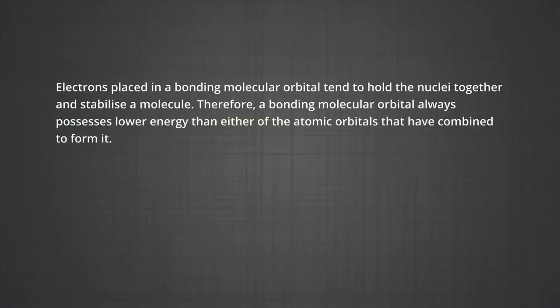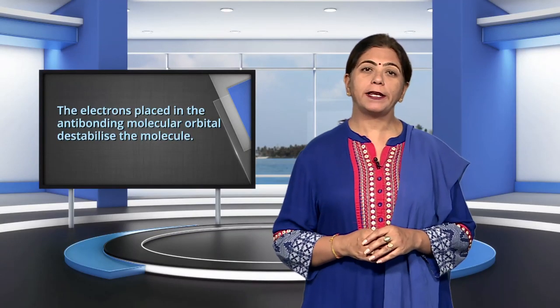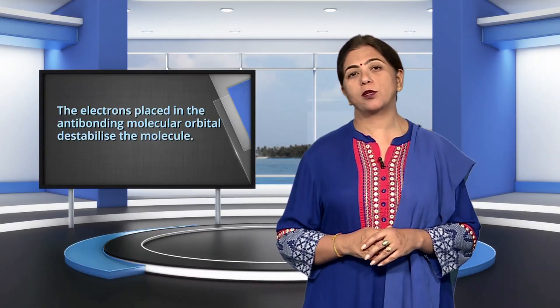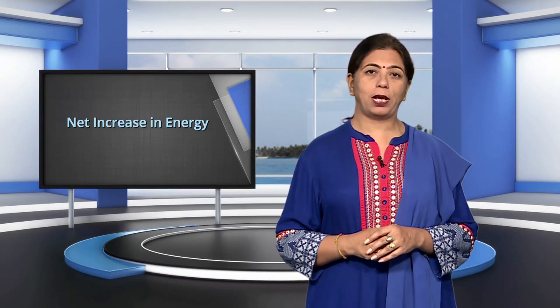Electrons placed in a bonding molecular orbital tend to hold the nuclei together and stabilize a molecule. Therefore, a bonding molecular orbital always possesses lower energy than either of the atomic orbitals that have combined to form it. In contrast, electrons placed in the anti-bonding molecular orbital destabilize the molecule, because the mutual repulsion of the electrons in this orbital is more than the attraction between the electrons and the nuclei, which causes a net increase in energy.